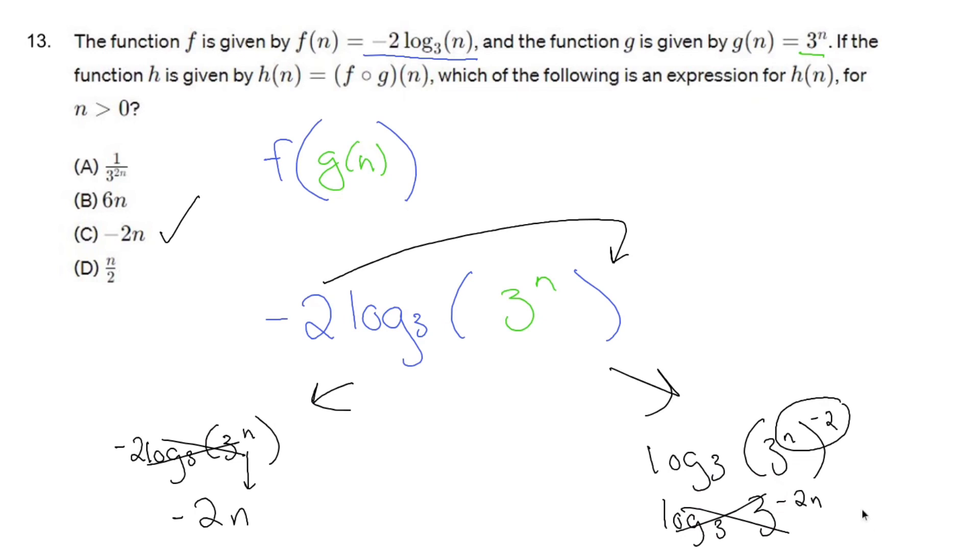Just like we had over here, log base 3 of 3 cancels out and you're left with negative 2n. Either way you get negative 2n. Which method is easier? I don't know, but we did it in two different ways and that's very important in math land, pre-calculus math land. They want you to look at things in like four different ways and I did two of them. So there you have it. Hope this helps.